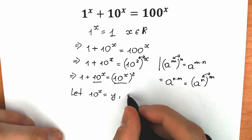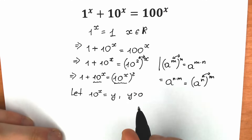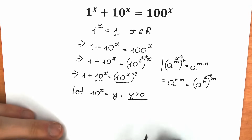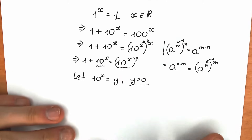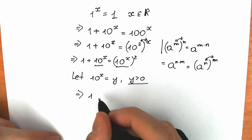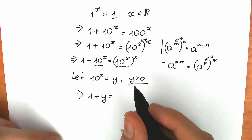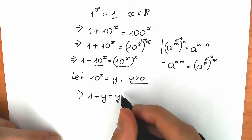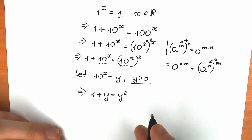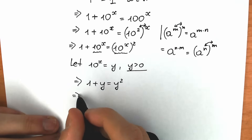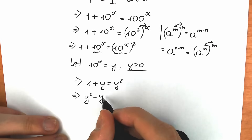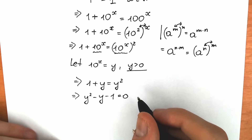Here is the main thing: y needs to be positive, because we're talking about an exponential function and the values of an exponential function are always positive. So y is greater than 0. As a result, our equation becomes 1 plus y equal to y squared — a basic quadratic equation.